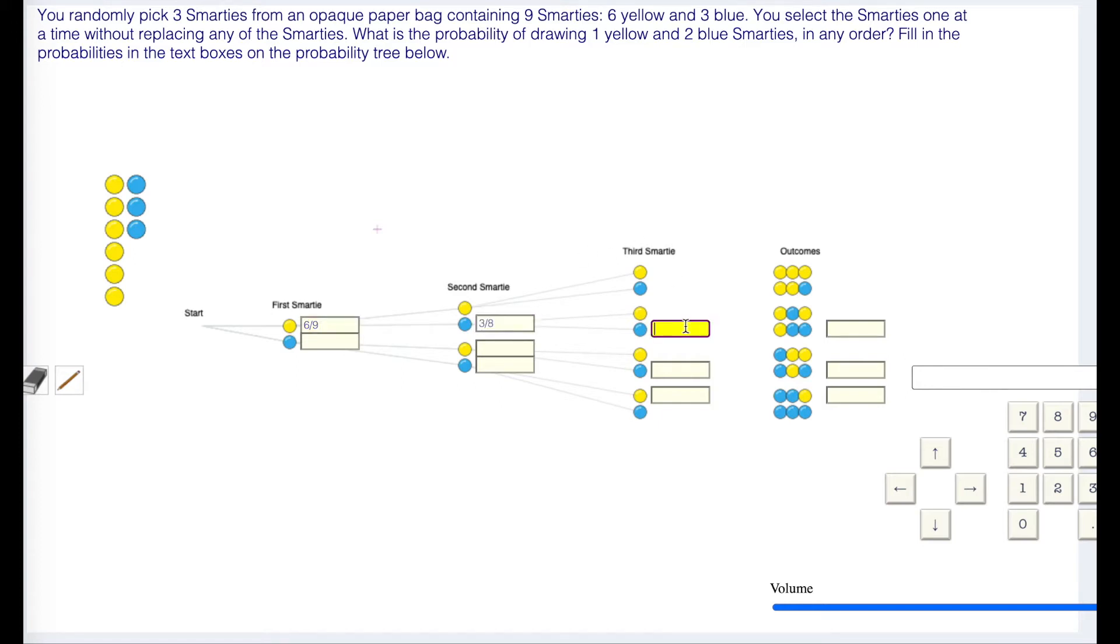On the last, you no longer have eight Smarties, but now you have seven, and only two are blue. Two out of seven. To figure out that probability, I'm going to multiply. Remember, we always multiply when we're going down the branches this way.